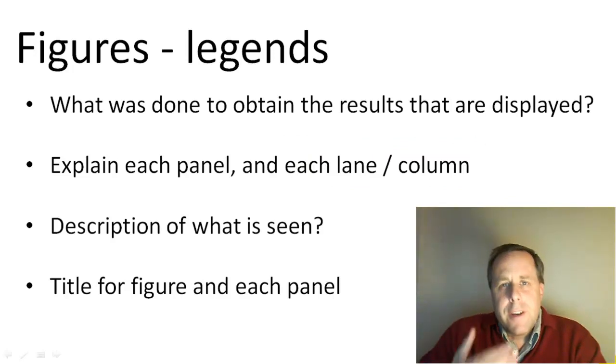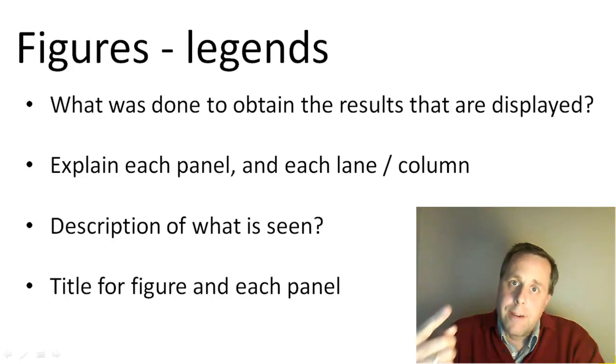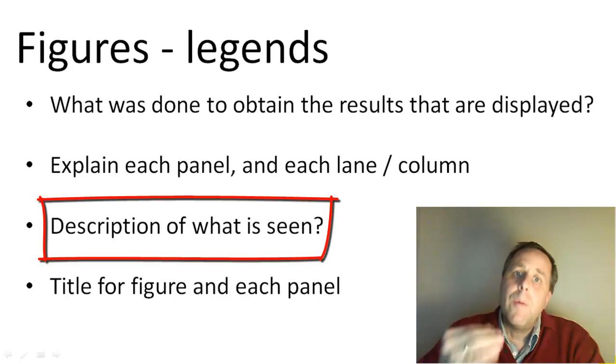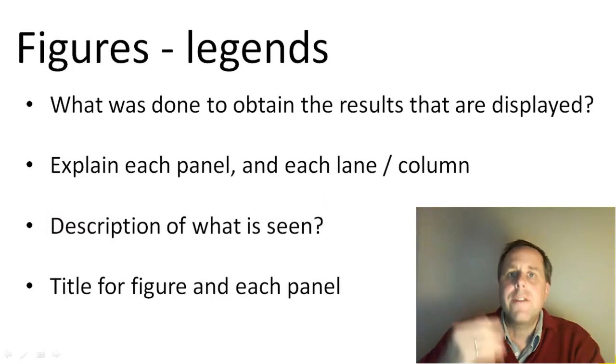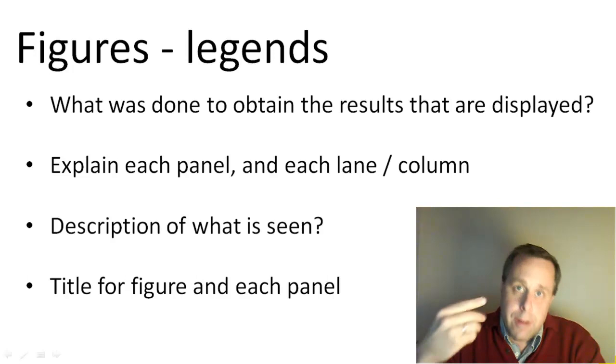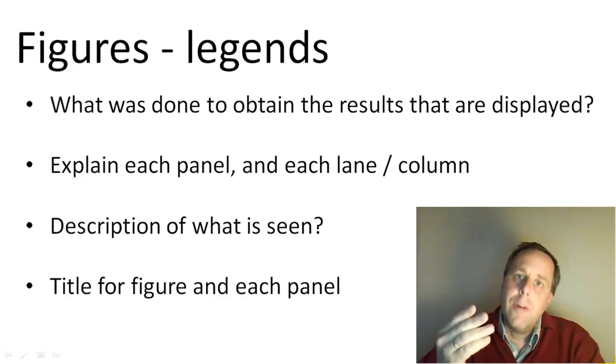Now, what's a controversial issue though, is whether you should only describe what has been done in order to obtain the results that are displayed, or whether you should even describe what you observe. The traditional way is not to describe what has been observed because you leave that to the reader. You only tell the reader what kind of experiment has been done and you leave it to the reader to look at the figures and draw his or her own conclusions as to what can be observed in these images and in the figure. However, that's only the traditional view.